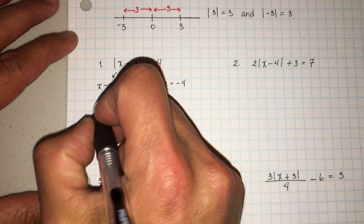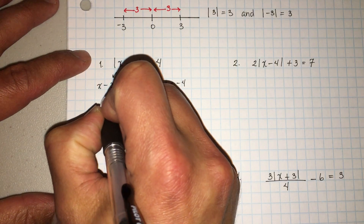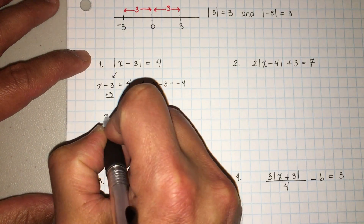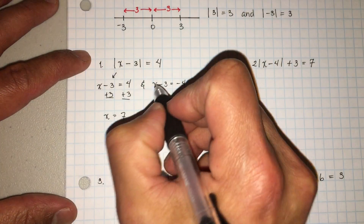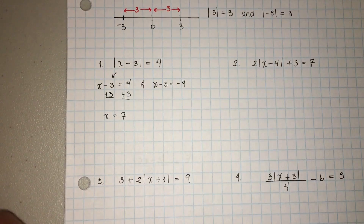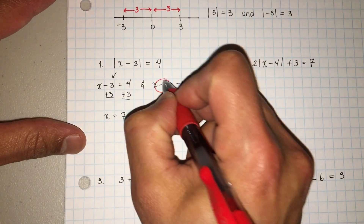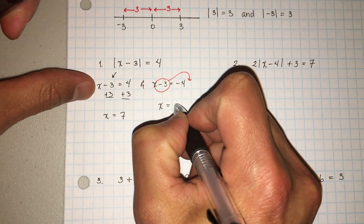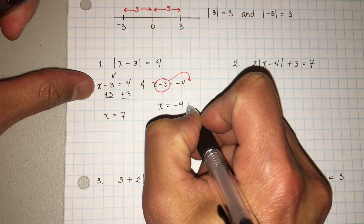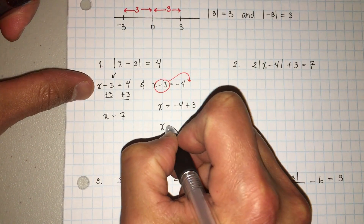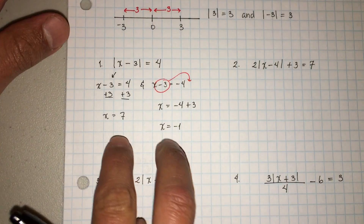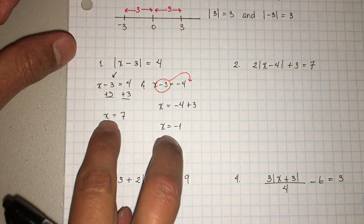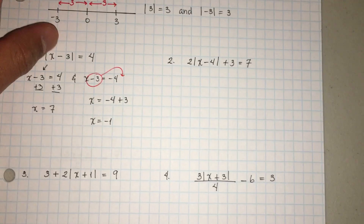Vamos a resolver este y este. For this one, you're going to add three to both sides — vamos a sumar tres a los dos lados — and we're going to get x is equal to seven. And then for the other one, same thing: letters on the left, numbers on the right. We end up with x is equal to negative four plus three, which means x is equal to negative one. Those are your two solutions — esas son las dos soluciones.